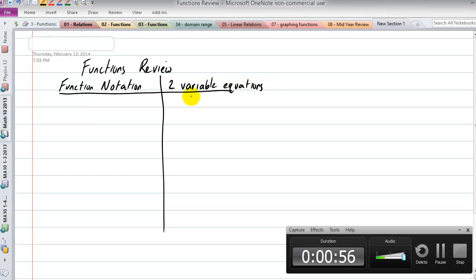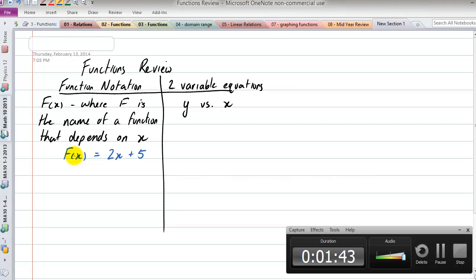So we have function notation and two-variable equations. Two-variable equations, I guess what we mean by that is just something like y versus x. And function notation is something like f(x), where f is the name of a function that depends on x.